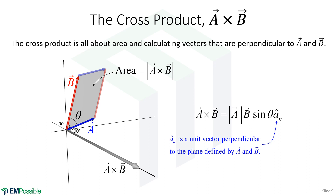We can write the cross product as: magnitude A times magnitude B times sine theta, times a unit vector in the normal direction. As the angle between A and B gets smaller, that parallelogram area gets smaller, so the overall cross product gets smaller. The direction is the unit vector normal to that surface.